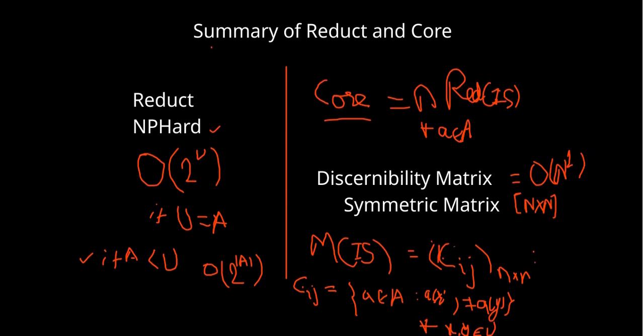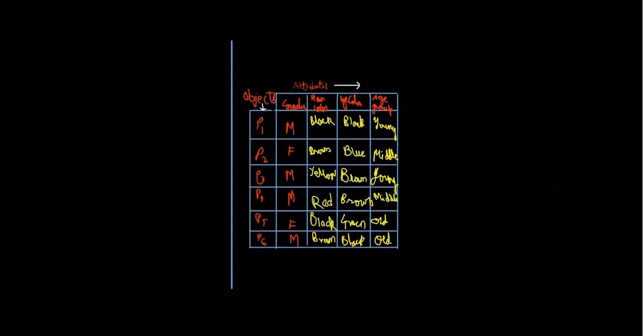Now let's look at how this matrix is being represented through an example. I have discussed the discernibility matrix, so now let me show how the matrix is being represented using an information system example. Let me define the information system.